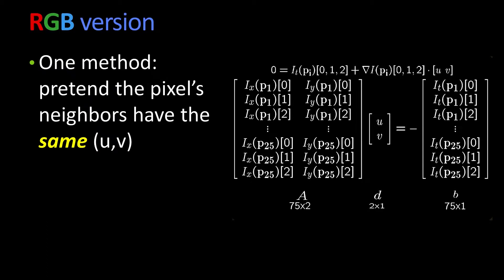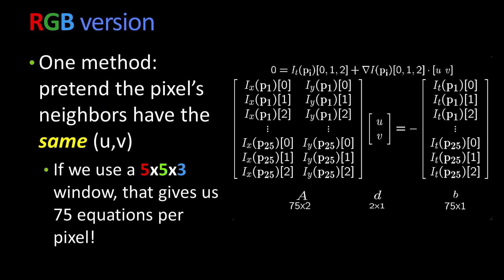One quick note: if instead of doing this in black and white, you were actually doing this in red, green, blue, in a colored version, you would now have, instead of 25 equations, you'd have how many? You'd have 75 equations, 5 times 5 times 3.